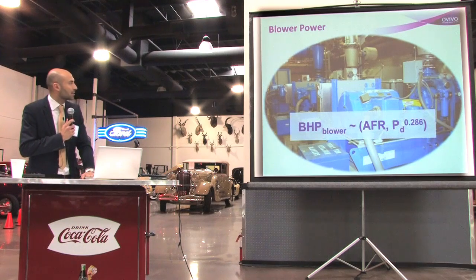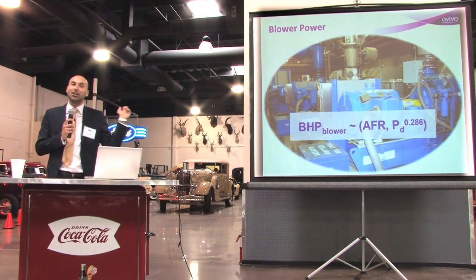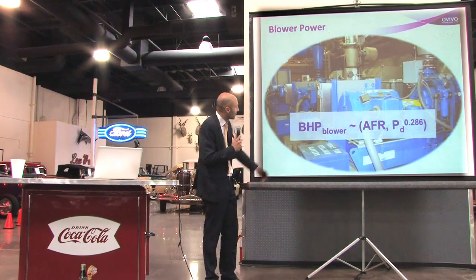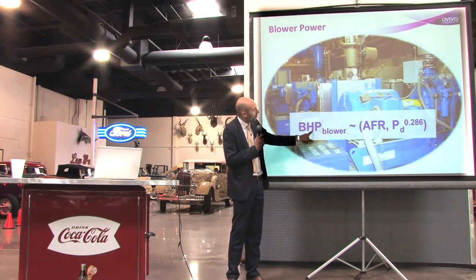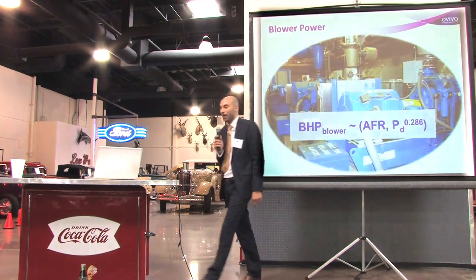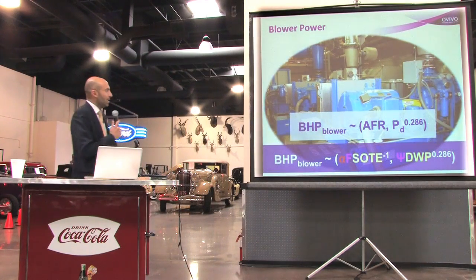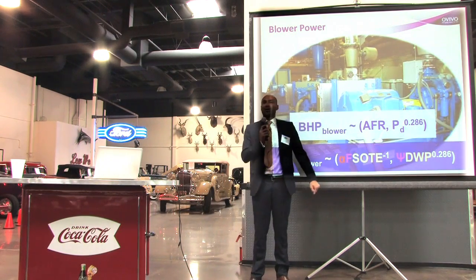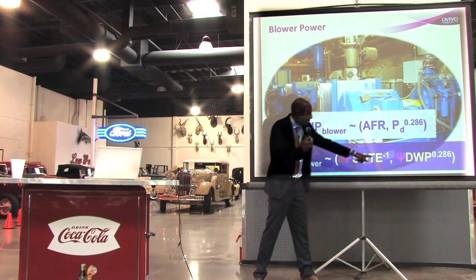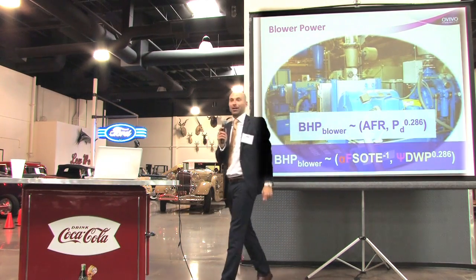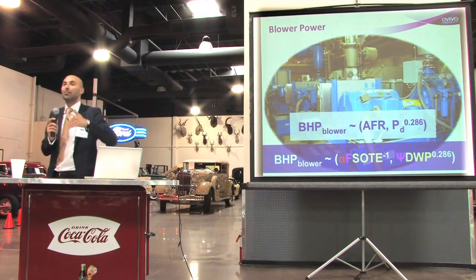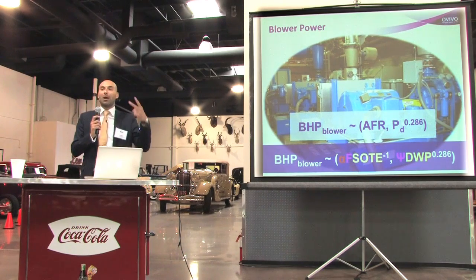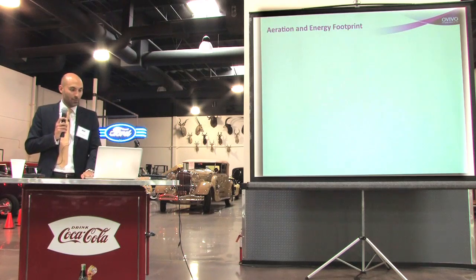The blower power formula (Metcalf & Eddy, Equation 5-56a) shows blower power is proportional to airflow rate and discharge pressure. Over time, airflow rate is inversely proportional to alpha·SOTE (which declines), and pressure increases — so two factors compound against you simultaneously, driving the power bill higher.